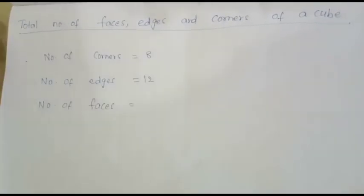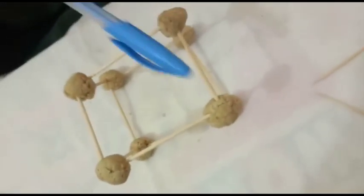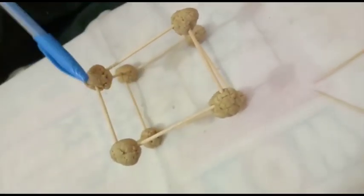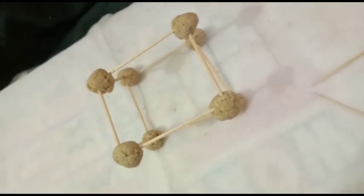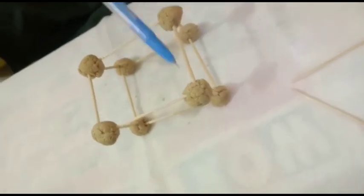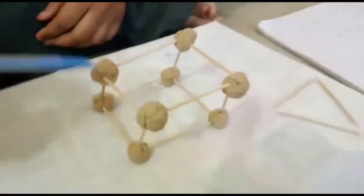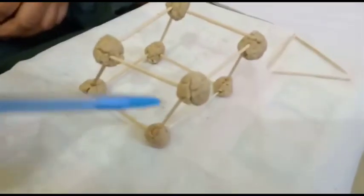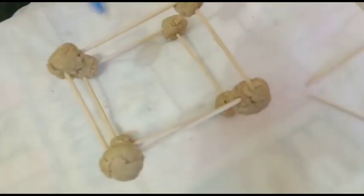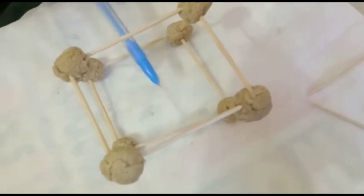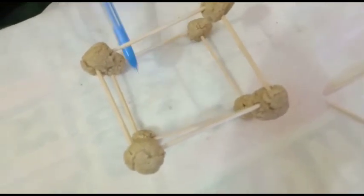Now coming to the total number of faces. This is the face of a cube. Let's count the faces: one, two, three, four, five, and six. We are having four side faces and two faces — top and bottom — making a total of six faces.